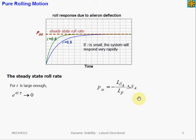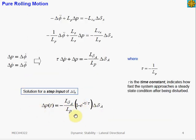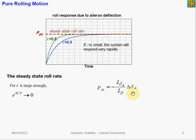The equation describes how to compute the steady-state roll rate given a specific degree of aileron deflection. This equation is derived directly from the solution, where the steady-state roll rate is obtained by substituting a very large value for time t. When t is very large, the exponential term reduces to nearly zero, giving us the steady-state roll rate value.